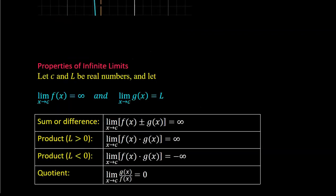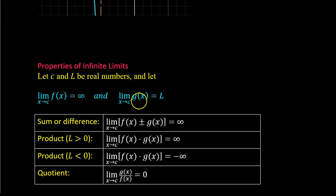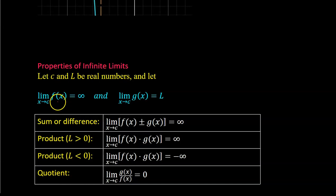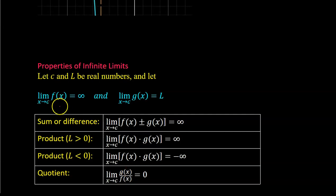Here are the properties of infinite limits. Let C and L be real numbers, and let the limit of f(x) as x approaches C equal infinity, and let the limit of g(x) as x approaches C equal L. Notice that f(x) has an infinite limit and g(x) has an actual limit. Every time you see f(x), think infinity; whenever you see g(x), think a regular number.